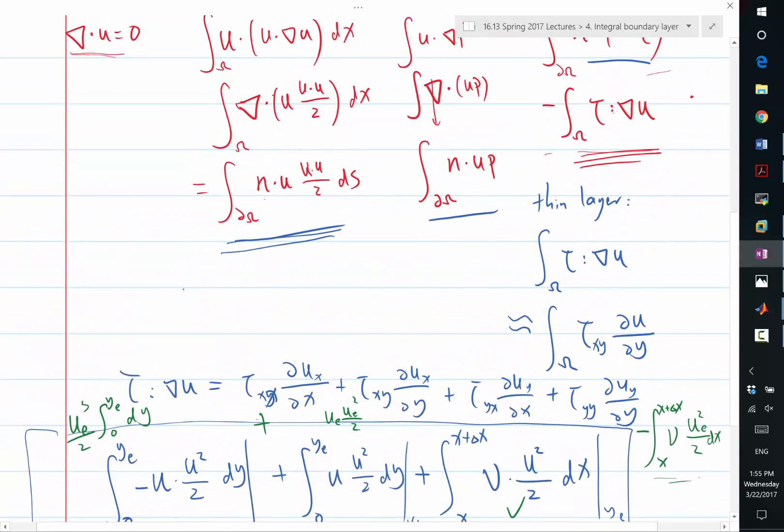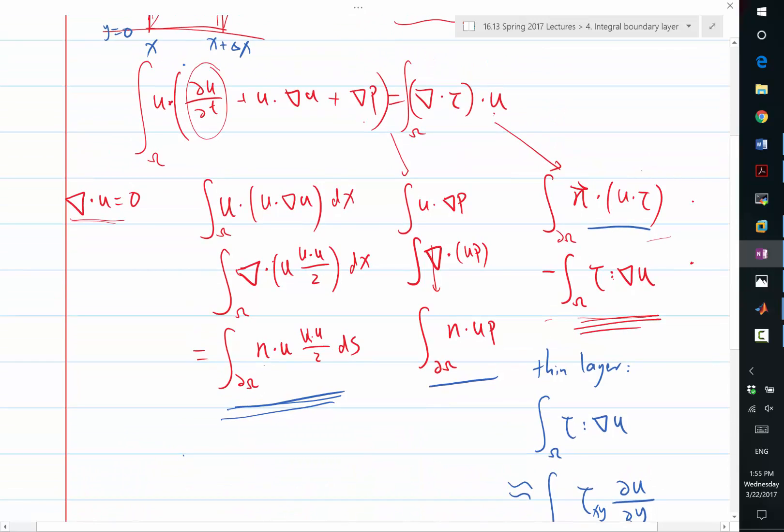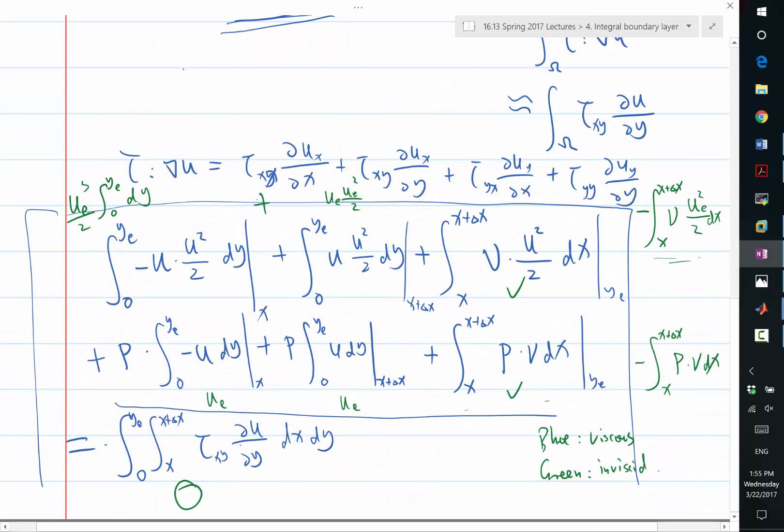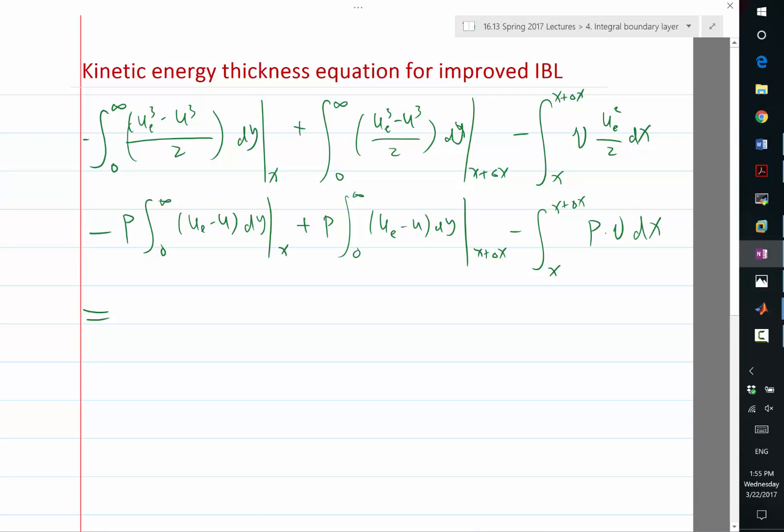Actually, I think I probably messed up with the sign here. The integration by parts actually gives me a minus sign. So here is actually a negative. And by subtracting blue from green, I have a positive sign here. So this is an integral from x to x plus delta x, integrate from 0 to infinity, tau xy partial u partial y dy dx. This is the equation I have.